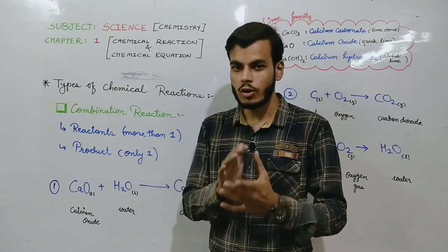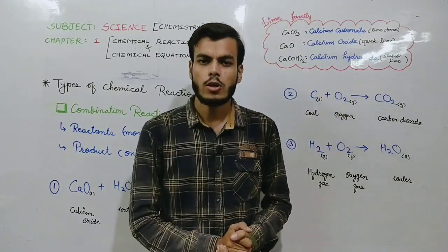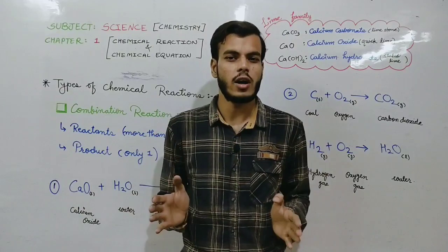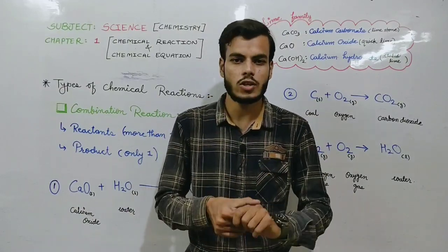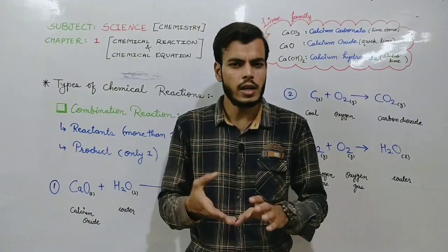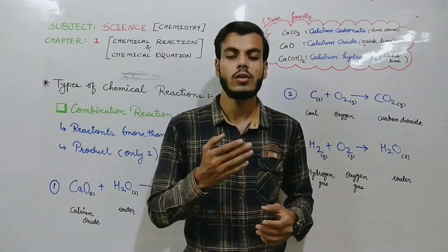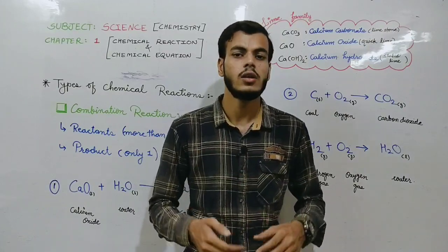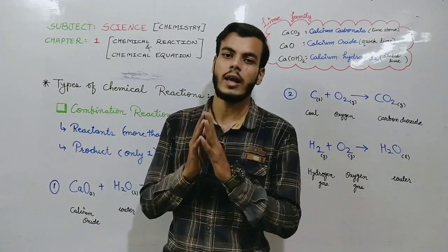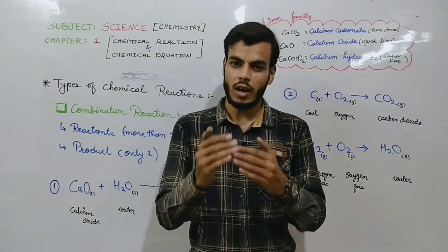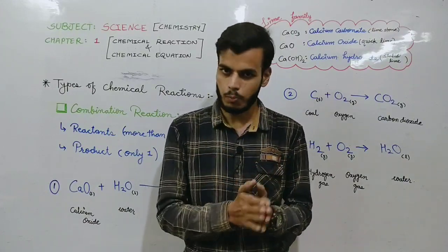So next our topic is types of chemical reactions. There are various kinds of chemical reactions — for example, combination reaction, decomposition reaction, oxidation, reduction, precipitation reaction, etc. So let's start them one by one.